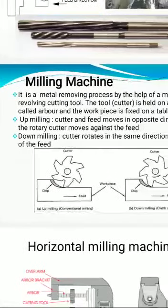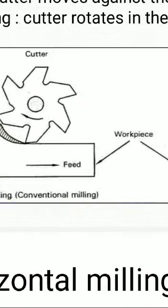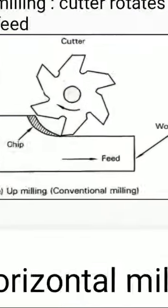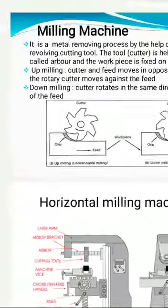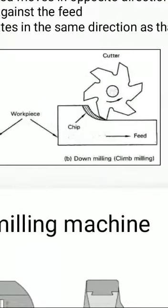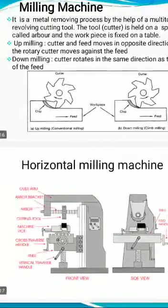In the milling machine, two types of principles are there: up milling and down milling. Up milling means the direction of the workpiece feed and the cutter rotation are exactly opposite — the cutter and feed move in opposite directions. Down milling means both the workpiece and cutter rotate in the same direction. We call that down milling.